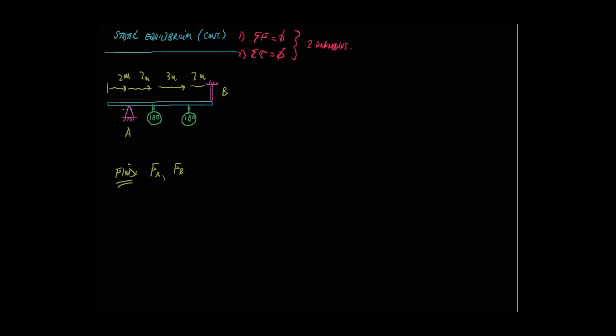So we do have two unknowns in this problem. We have the force at A due to that fulcrum, and we have a cable here at B, and we're asked to find the force in both of those. So two unknowns, that means we're going to need both equations to solve that.